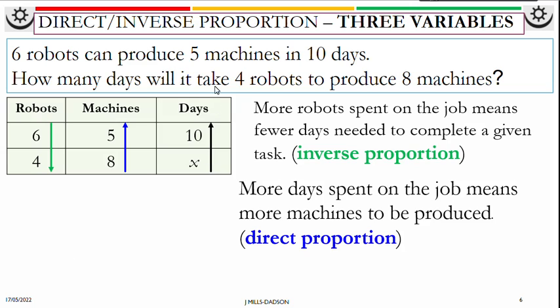So days going up, machines must go up. Start the equation with the days because that's where the X is. X over 10 equals - this one is going down, so it should be 6 over 4. This one is going up, so it should be 8 over 5.